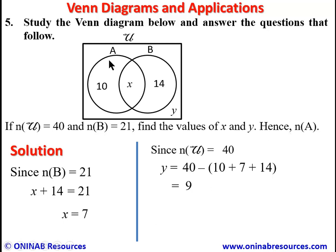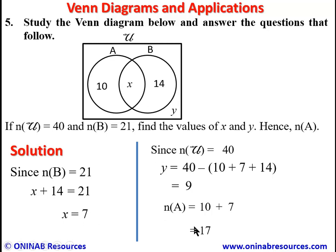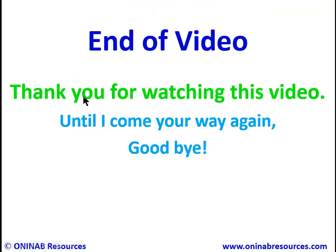To find n(A), we add all values within circle A: n(A) = 10 + 7 = 17. We have done justice to problem five. This is the end of the video — thank you for watching, and goodbye.